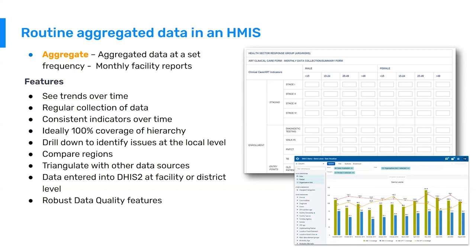Data is often entered into DHIS-2 at facility or district level for aggregated data. DHIS-2 supports a very broad range of robust data quality assurance tools for aggregated data. These include things like validation rule analysis, outlier alert and detection, and year-over-year trend analysis. There is in fact an entire academy devoted to going through the various data quality features available for aggregated data.